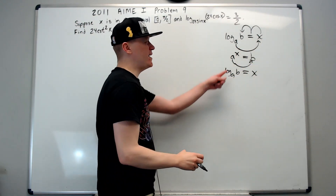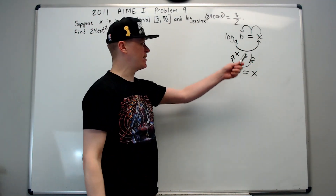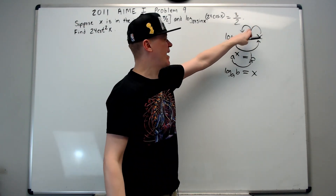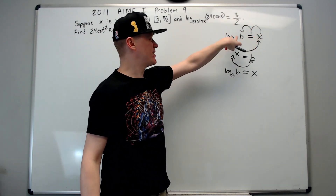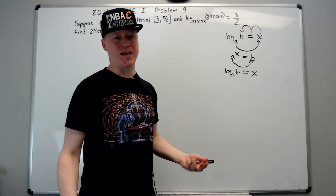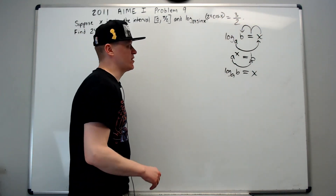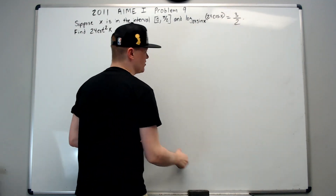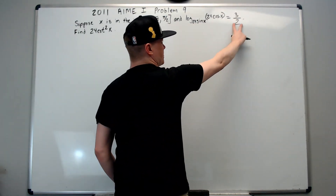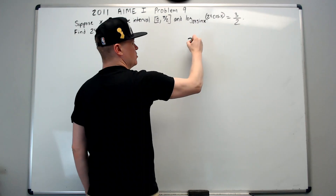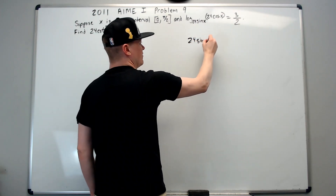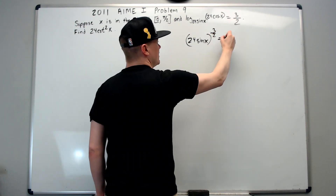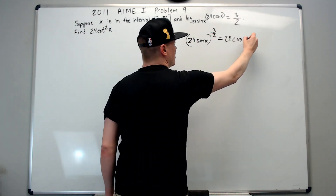I had a stuffed animal as a kid that was a giant frog — you get at the fairgrounds — and it had two big eyes, and it just smiles. It looks like this: my frog face. That's why I call it that. So it's just a method of converting, and we're going to use that here and apply it directly. This to this power equals this.